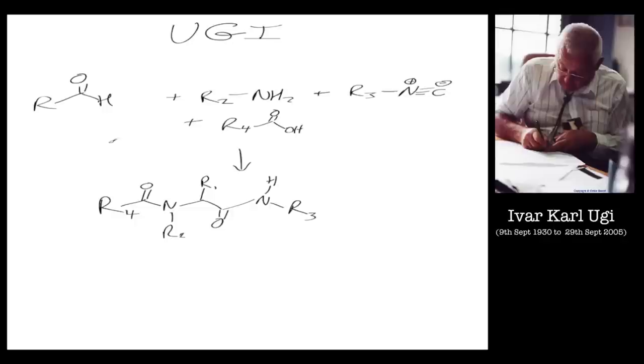Here we're going to go over the Ugi reaction, which is a four-component reaction to make this amino acid derivative. Let's choose a different color just to highlight this amino acid derivative. I just highlighted that in blue - there's the amino acid.